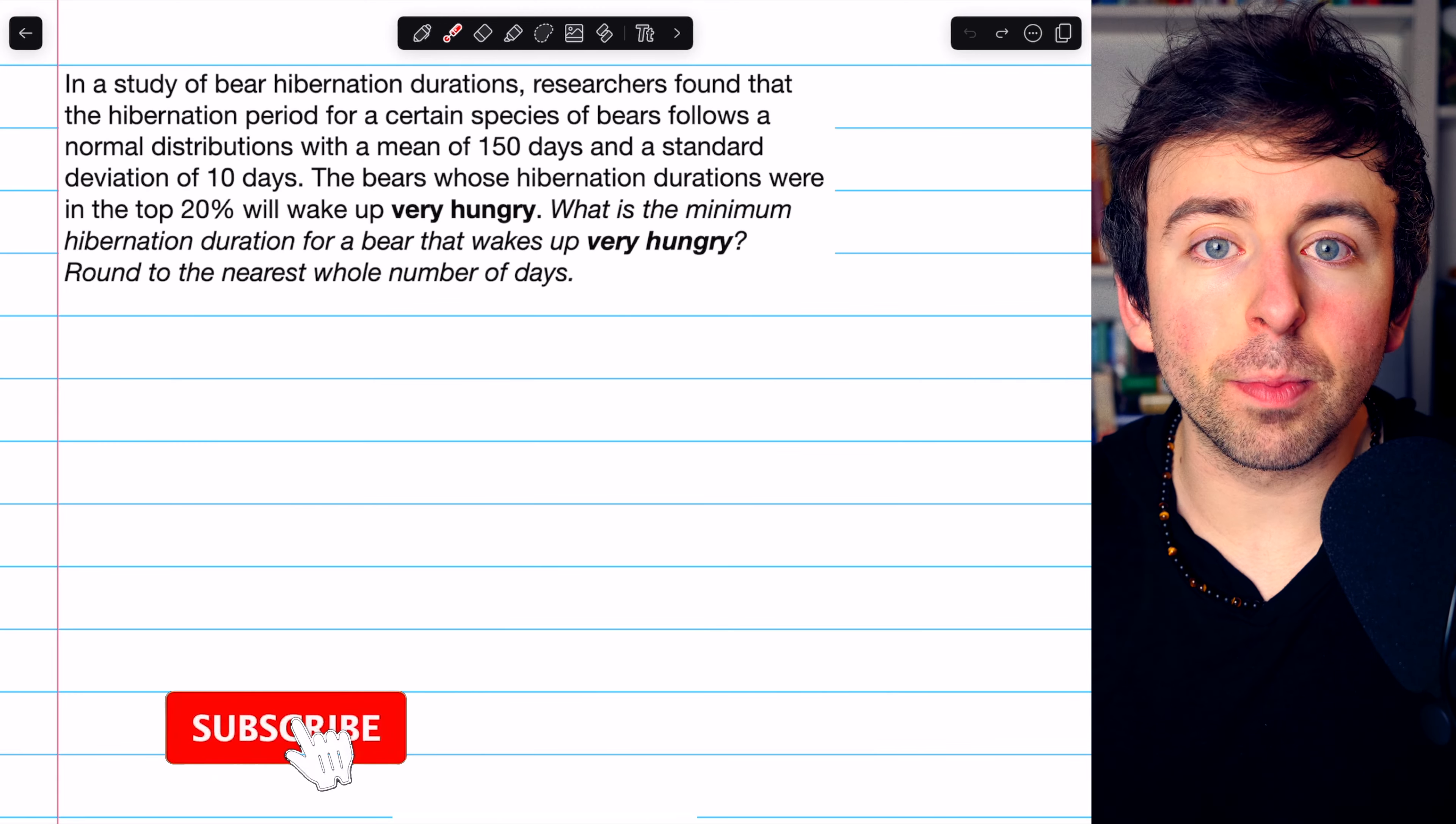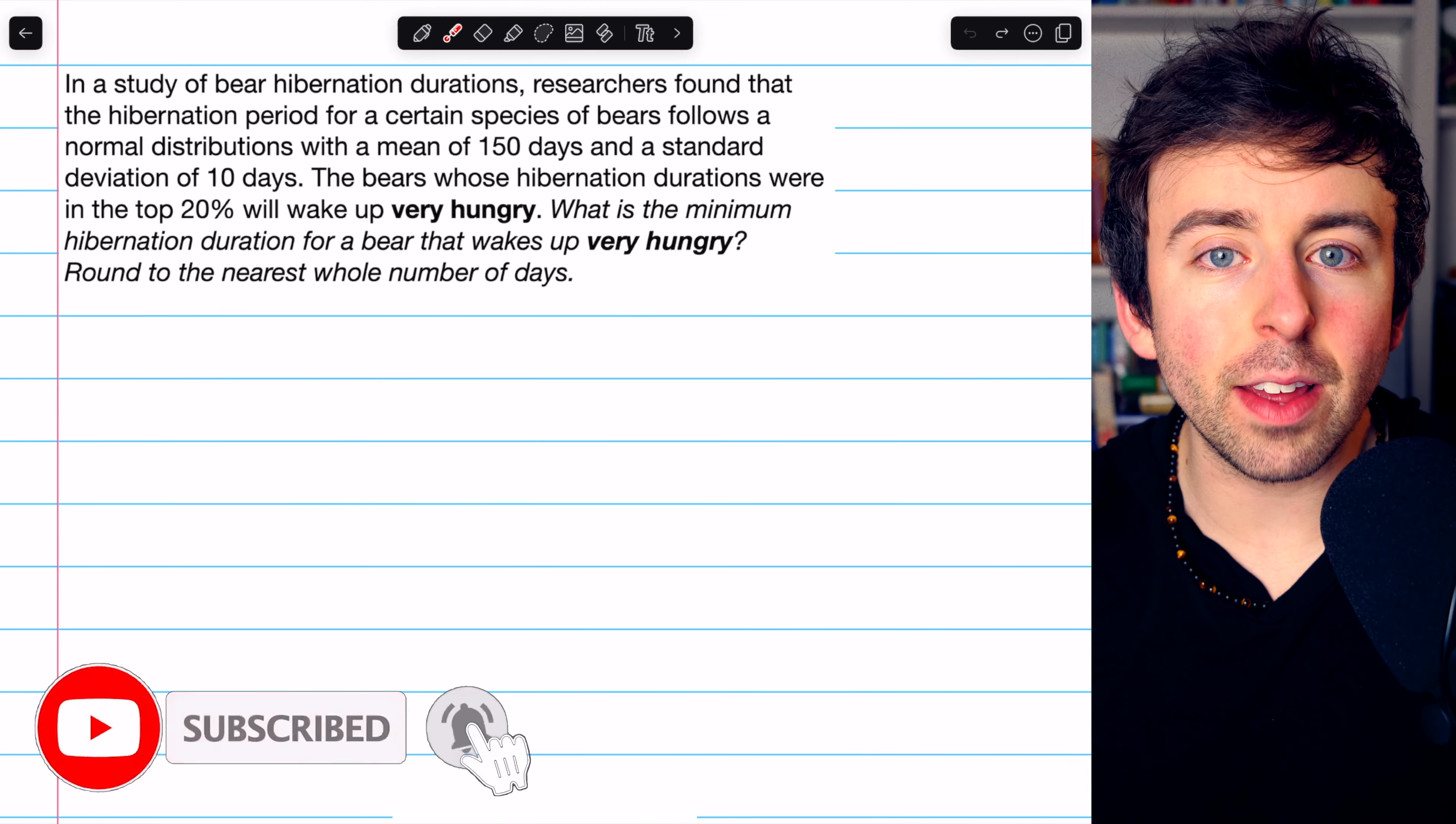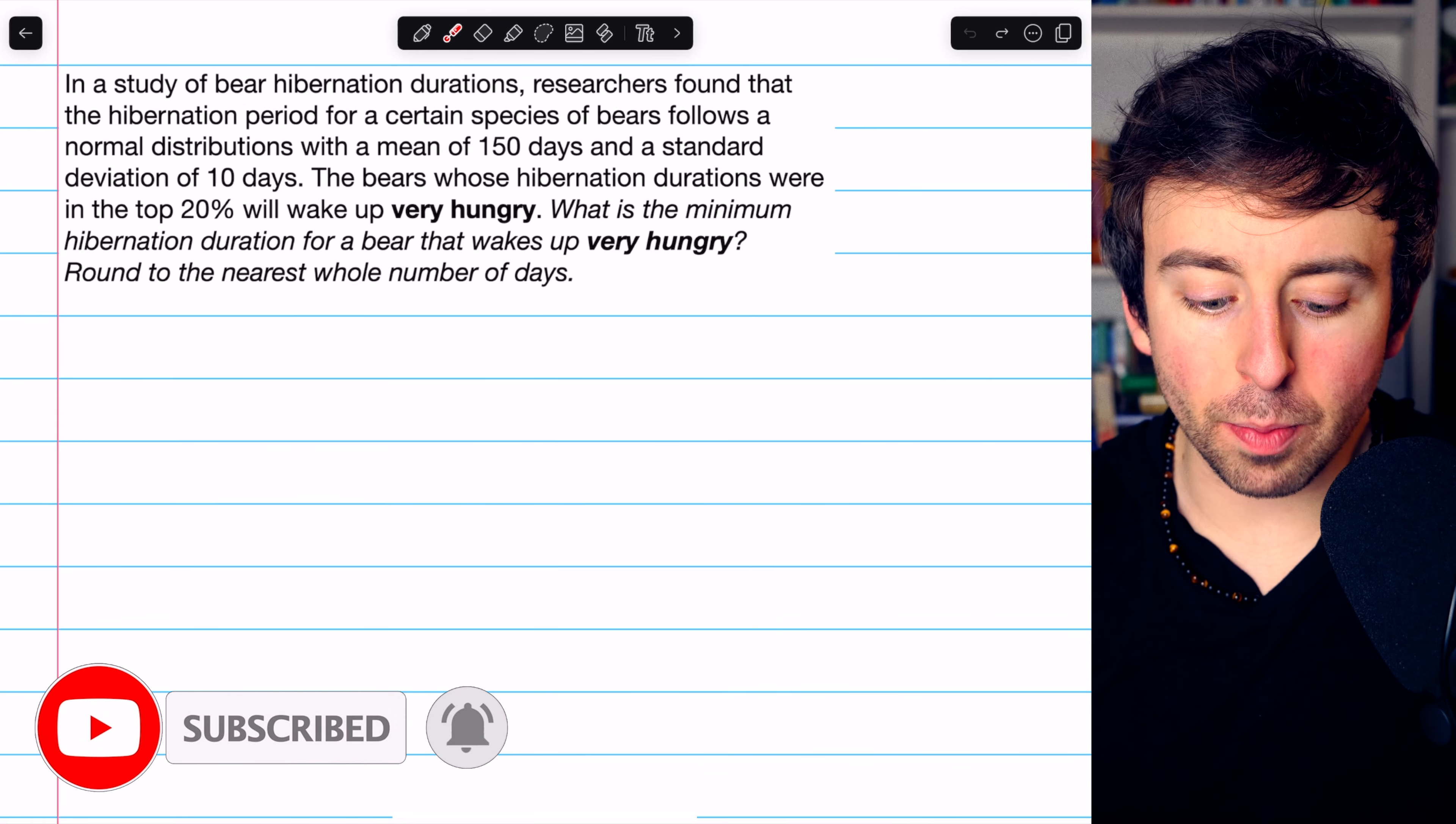We're going to find a z-score from a given percentile and then find the data value at that percentile. Let's read the problem.